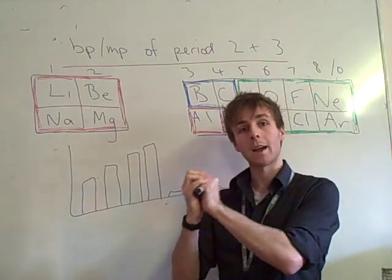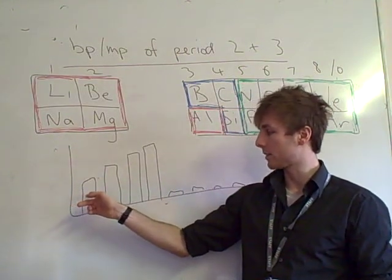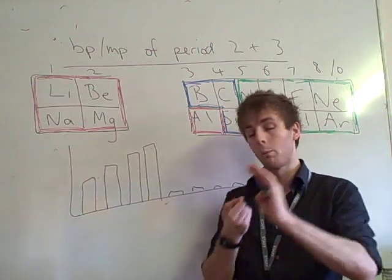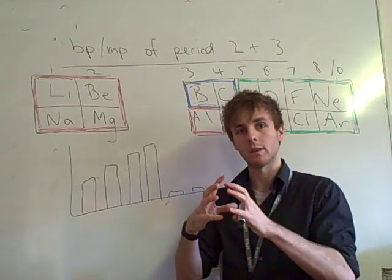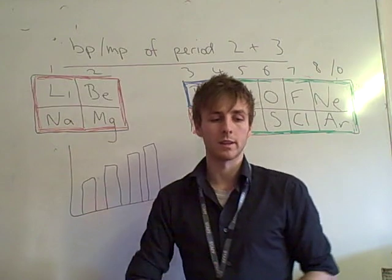The atomic radius gets smaller as we go across. Therefore, the ions can pack closer together. So there's two reasons why this boiling and melting point increases from group one, two, and three. More delocalized electrons, so more negative charge, stronger electrostatic forces. And also, the ions are smaller so they can pack closer together.